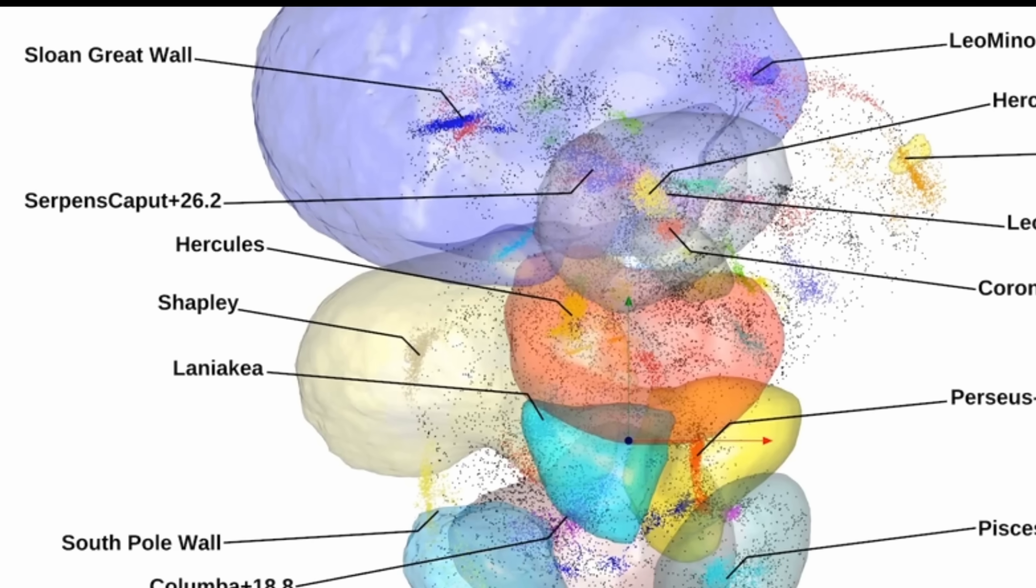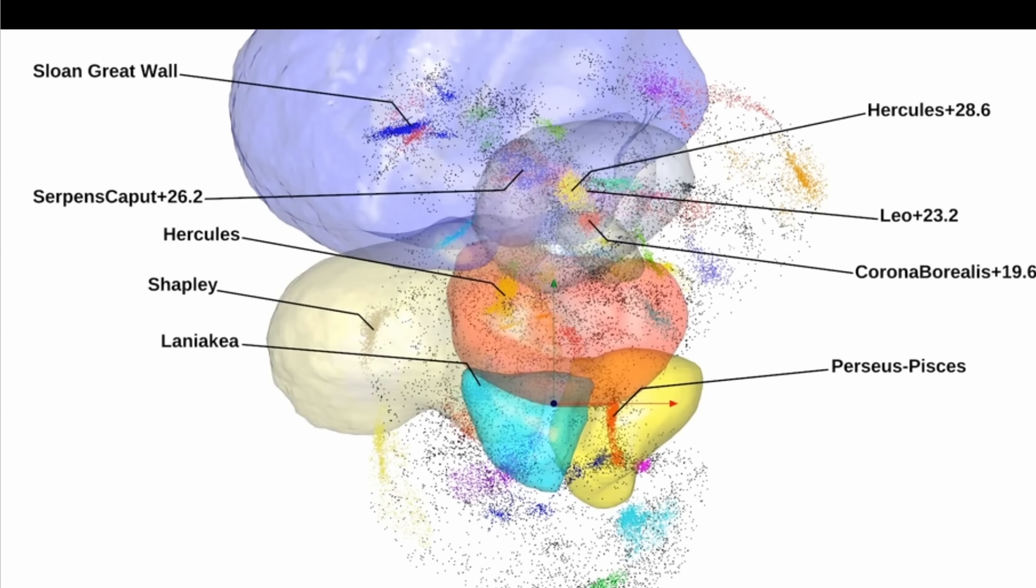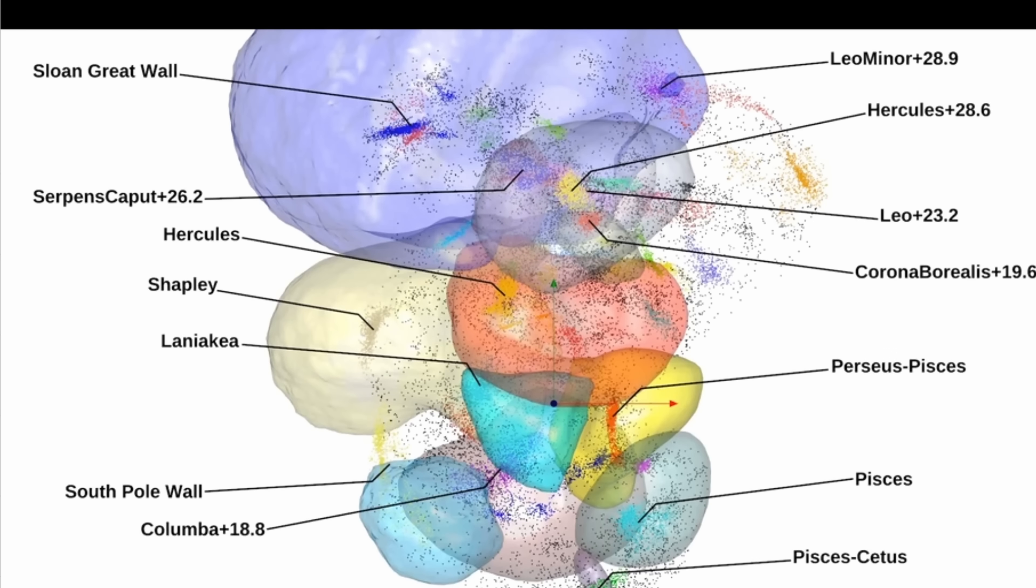But here you can actually see some of the other structures as well. Which in essence creates this beautiful three-dimensional map of enormous superstructures traveling in outer space following the mysterious cosmic web. Making this a really impressive achievement and a really beautiful image.